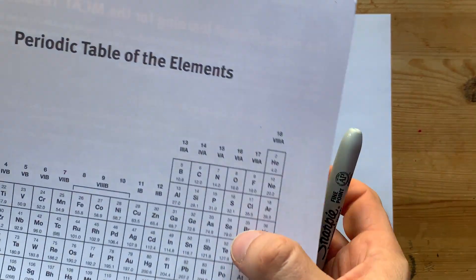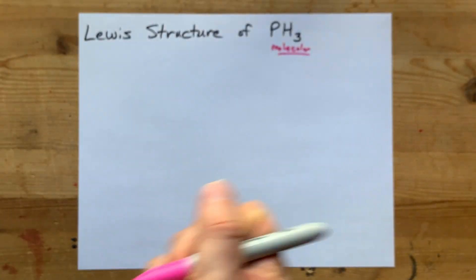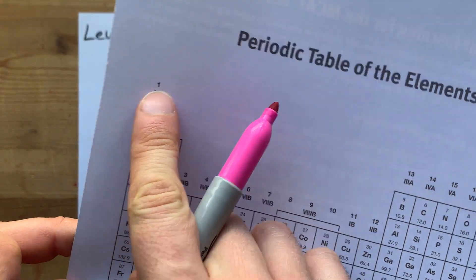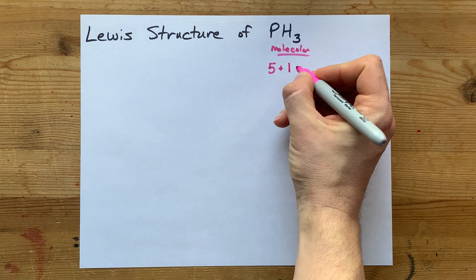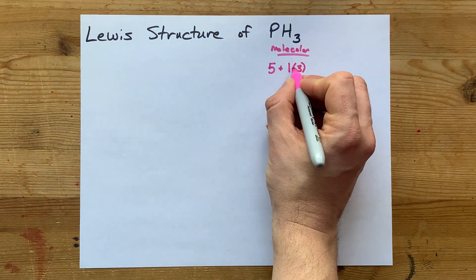Phosphorus, let me go find it here, is in group 15, which means it brings five valence electrons with it. Hydrogen in group 1 brings one valence electron with it, but there are three of them, so that's 1 times 3.